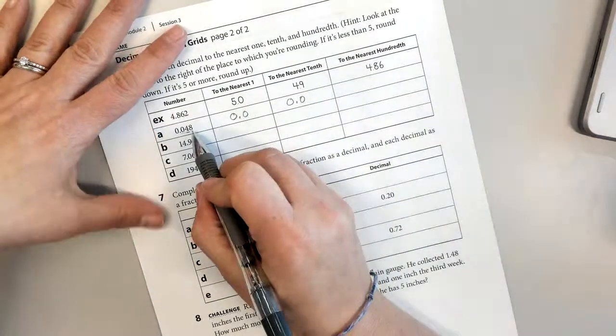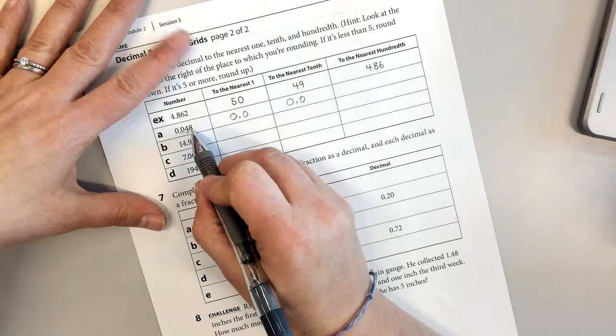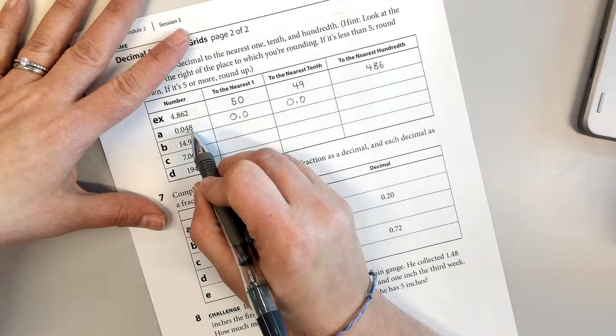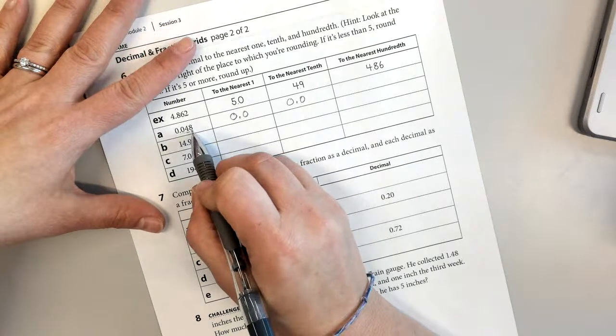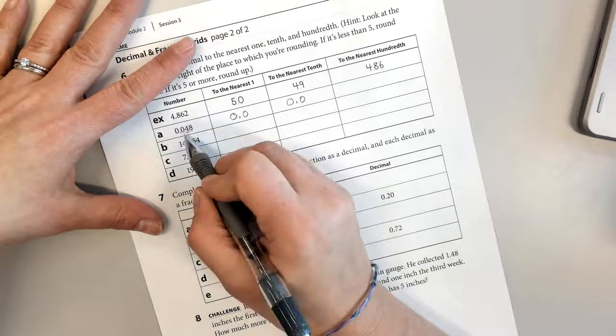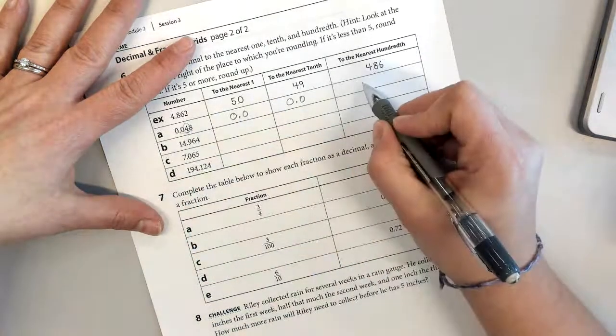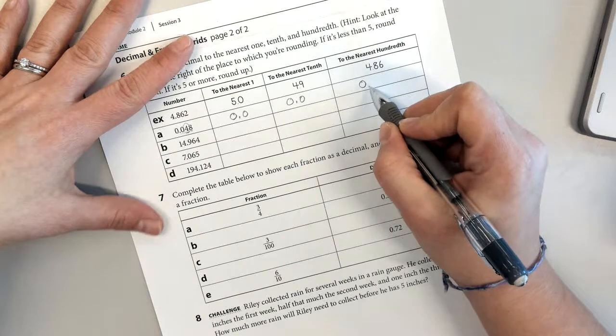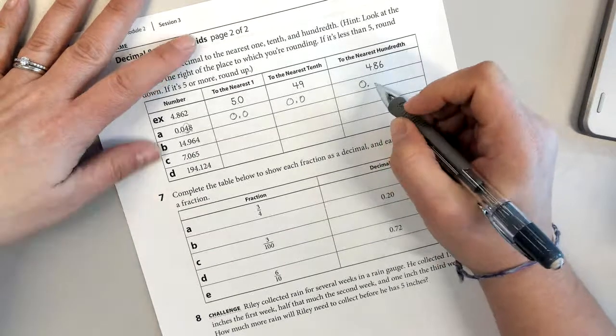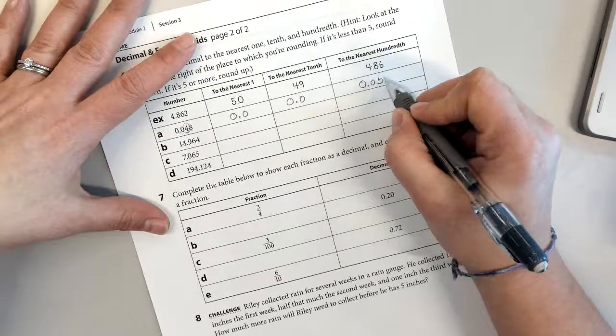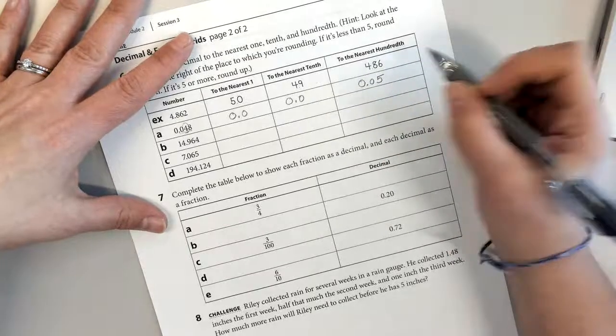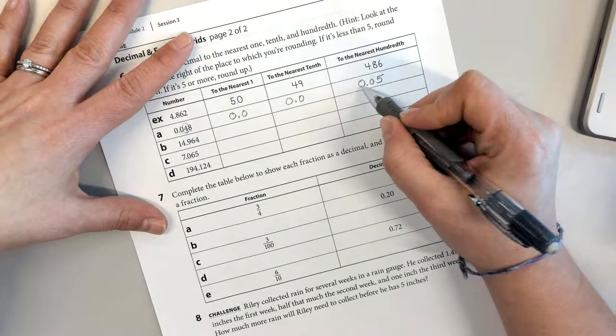To the nearest hundredth, now I need to look at the thousandths place. Oh, that's five or more, so I'm going to raise the score, but I only raise it to the hundredths place, I'm sorry. So it's going to become five hundredths. I don't do anything with the ones or the tenths.